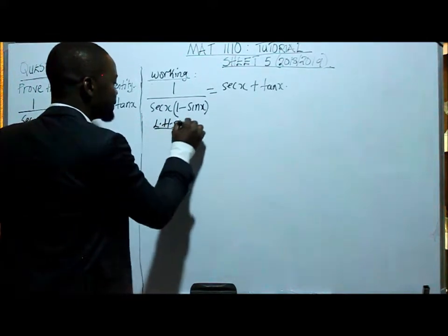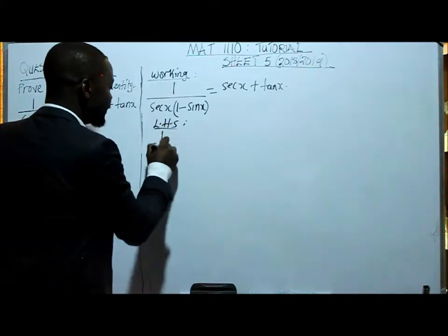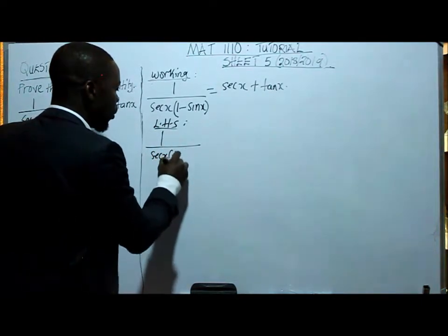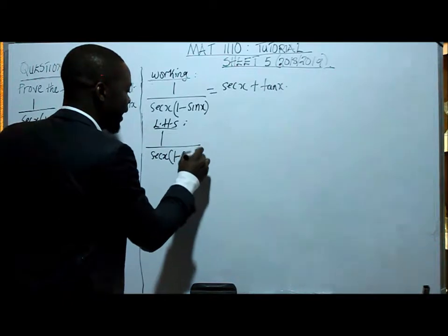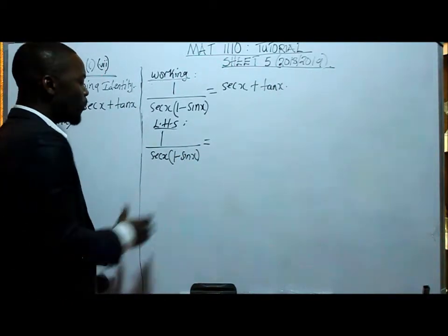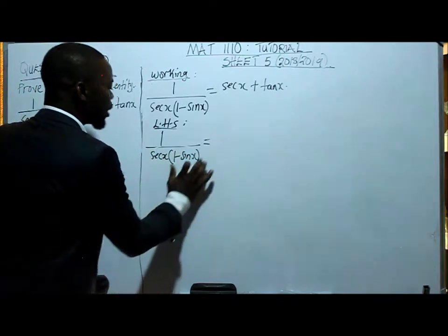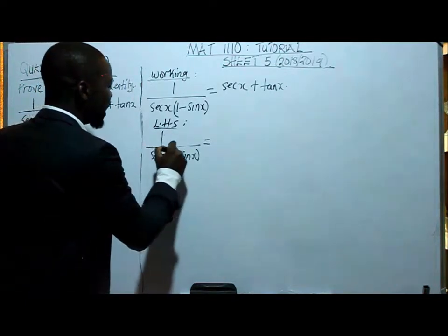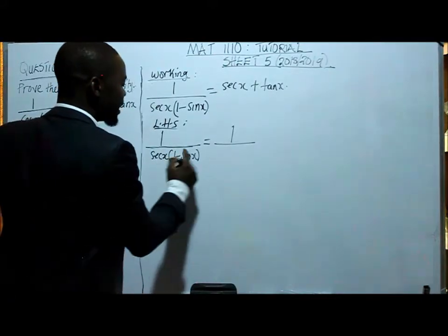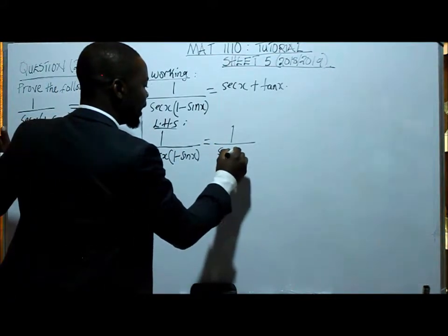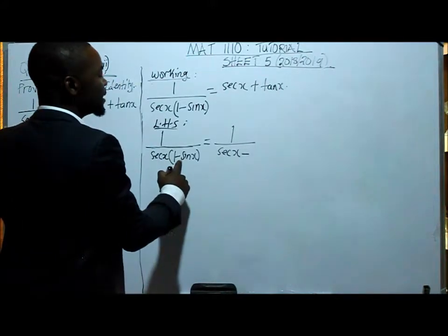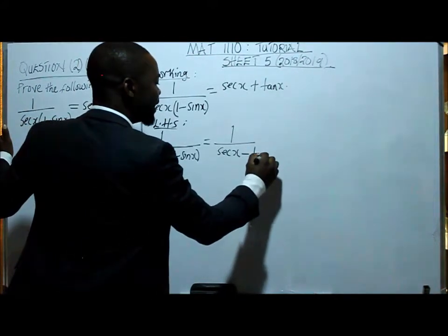So the left hand side: we have got 1 everything divided by sec x times 1 minus sin x. From here, it's just a matter of us first multiplying or simplifying our denominator. So I've got 1 everything divided by sec x times 1, which is sec x, minus what is sec x times sin x? It's tan x.